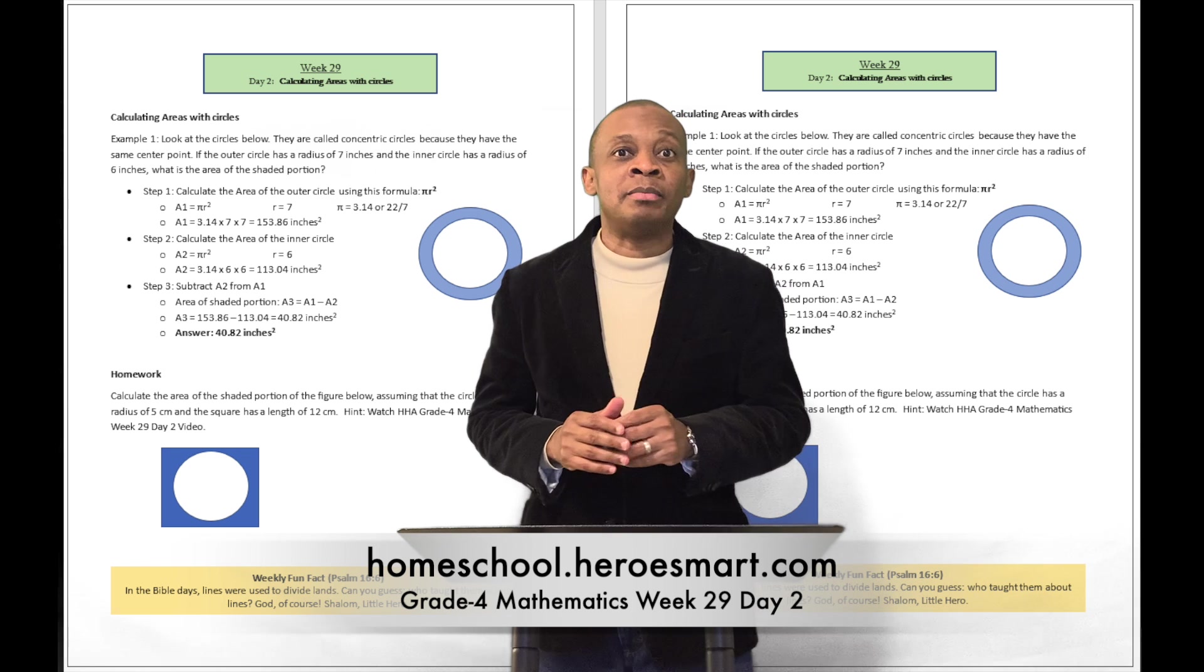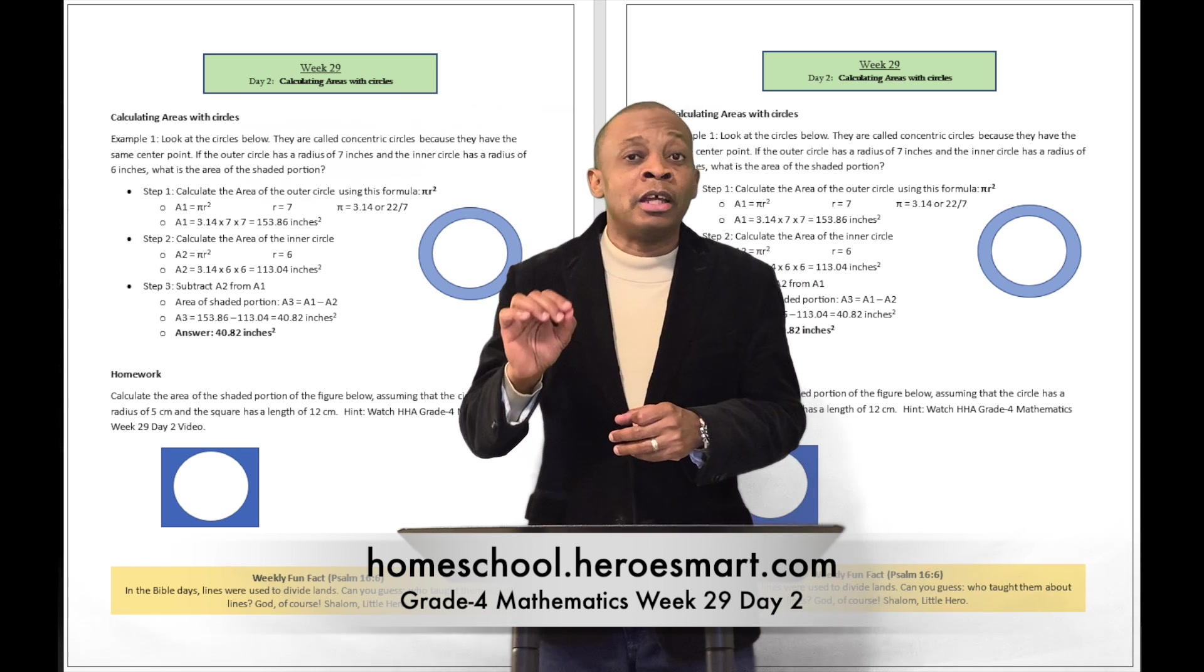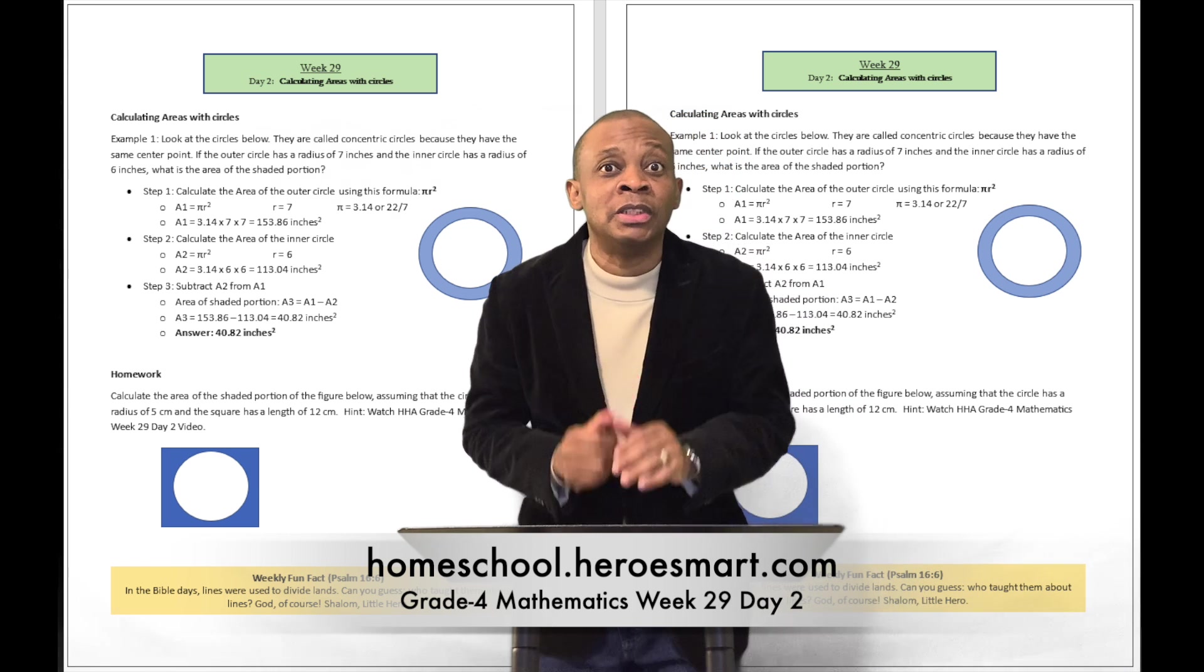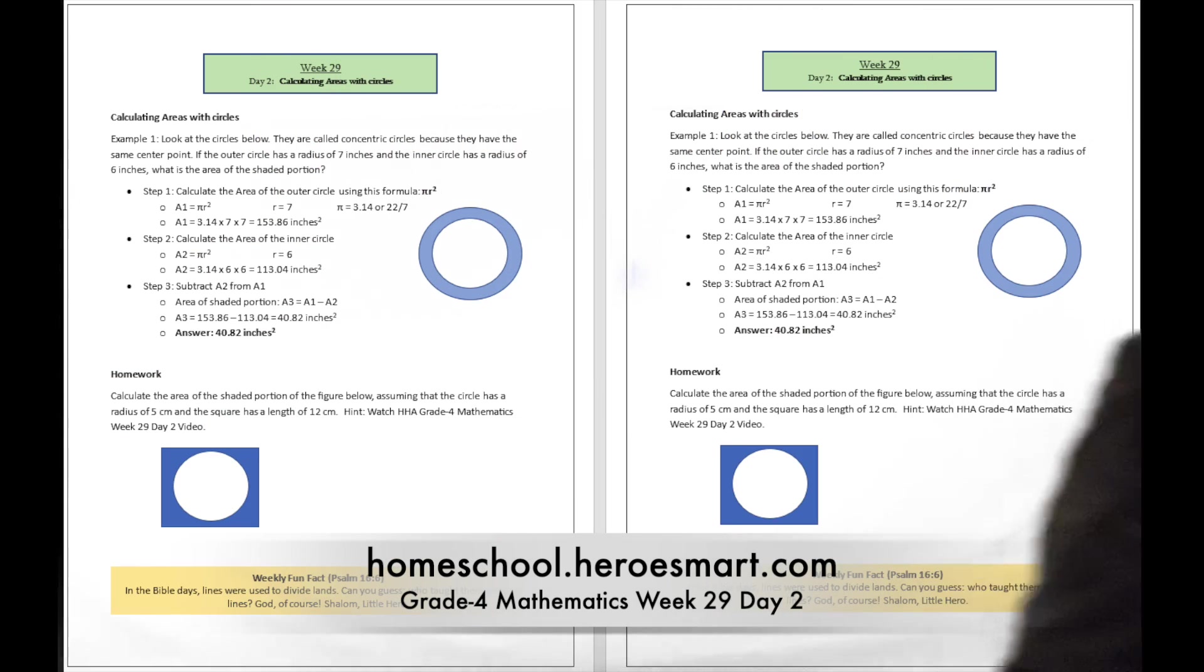You know, pi is going to be a mathematical constant that is 22 divided by 7. And then r is going to be the radius of the circle. All right. Let's use this example to commit that to memory.